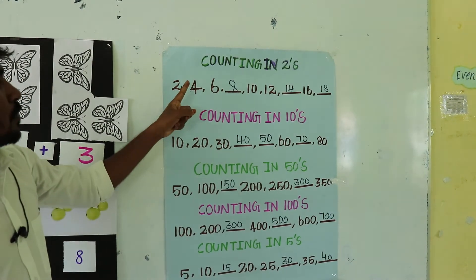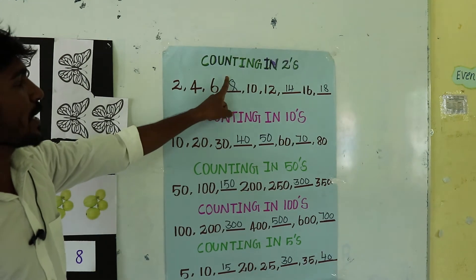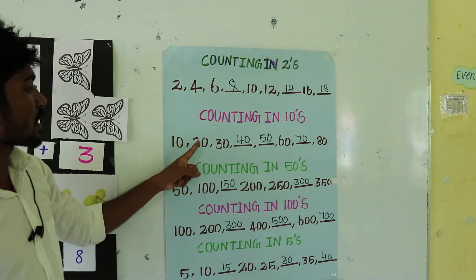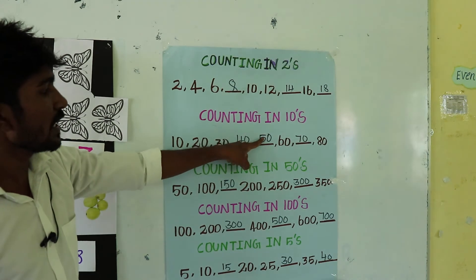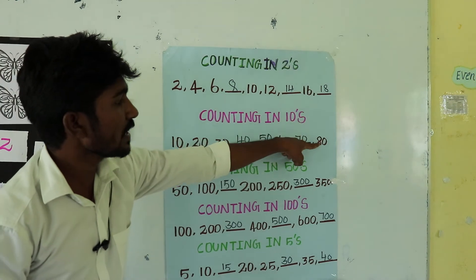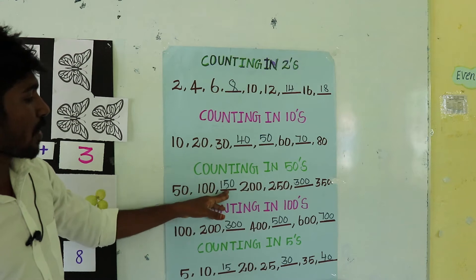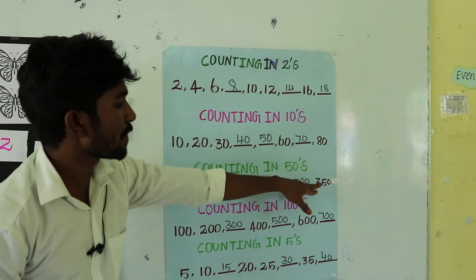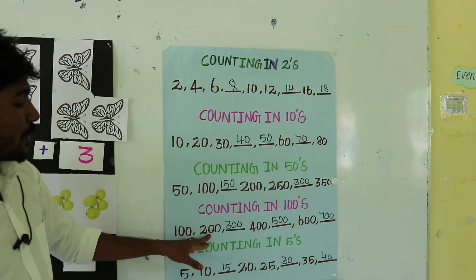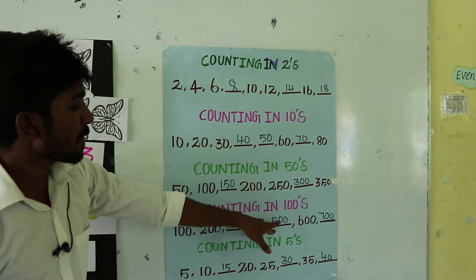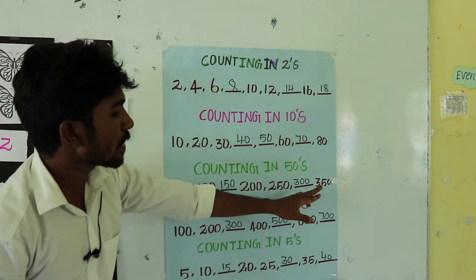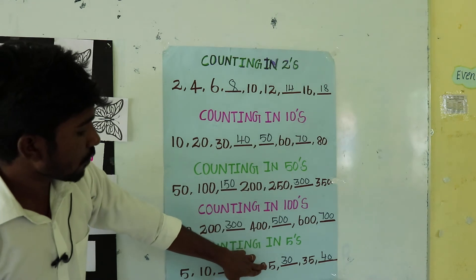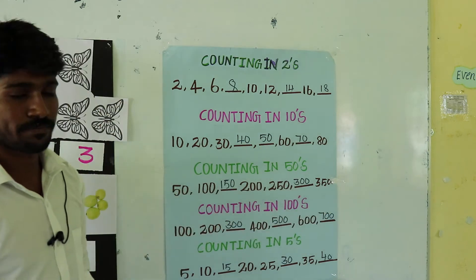Once again recall — counting in 2s: 2, 4, 6, 8, 10, 12, 14, 16, 18. Counting in 10s: 10, 20, 30, 40, 50, 60, 70, 80. Counting in 50s: 50, 100, 150, 200, 250, 300, 350. Counting in 100s: 100, 200, 300, 400, 500, 600, 700. Counting in 5s: 5, 10, 15, 20, 25, 30, 35, 40.